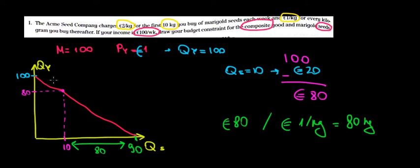So until here we have a slope of 2 because we trade off 1 kilo of seeds for 2 kilos of the composite good. Remember, because if we spend 2 euros on 1 kilo of seeds, we're not spending 2 euros on the composite good. And here the slope becomes negative 1 because the trade-off is the same.